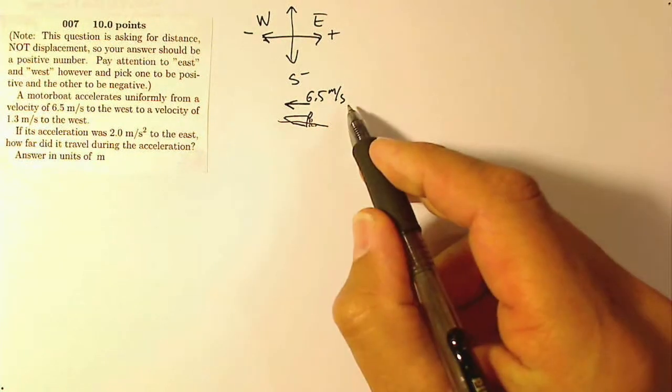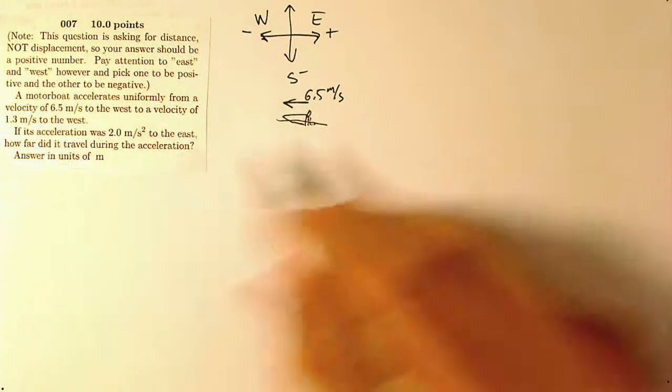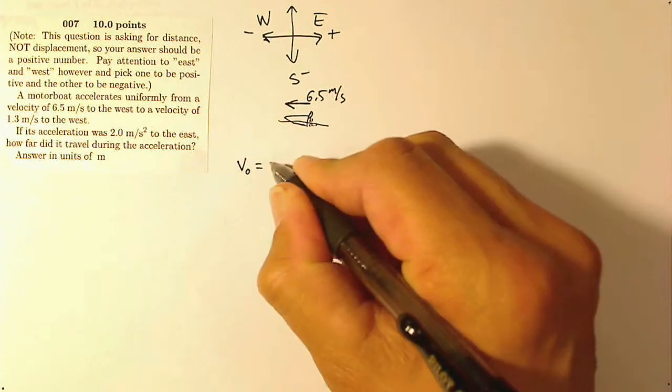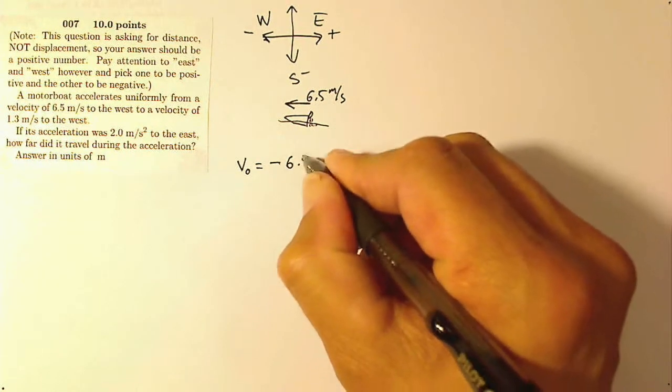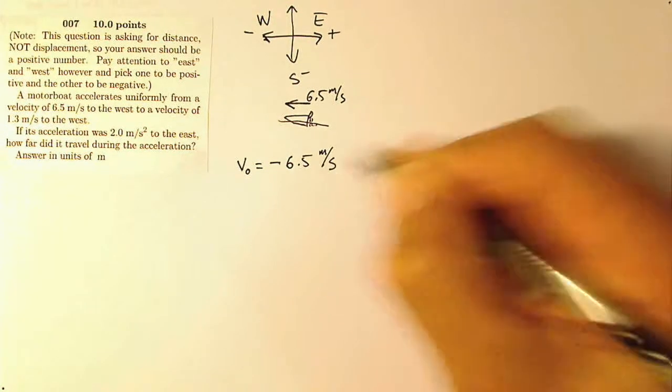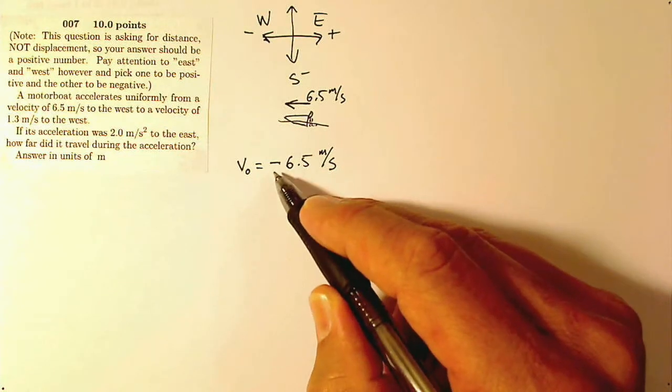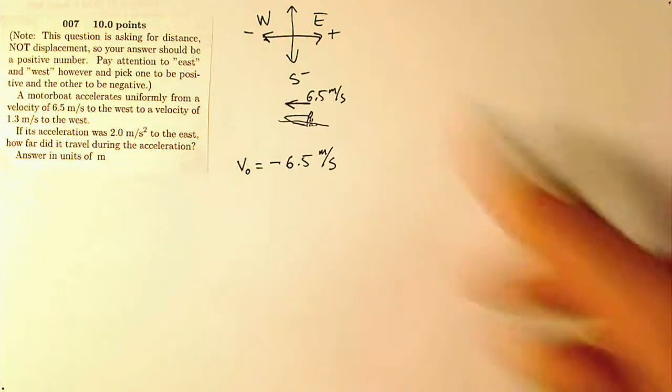So if that's west, right, so it's moving to the west. If that's west, I'm going to say that my initial velocity is negative 6.5 meters per second. All that's telling me is that it's moving 6.5 meters per second to the direction I've labeled as negative, which in this case is west.